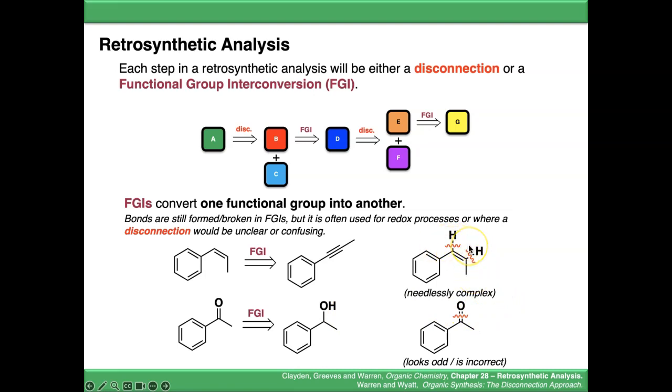So we tend not to put these disconnection wiggly lines on, because it's unclear or confusing. For these steps, you just put FGI over the arrow, and then you can see what functional group has been converted into which one.